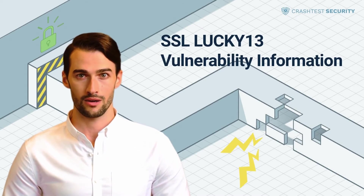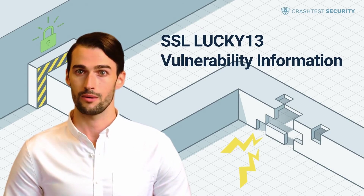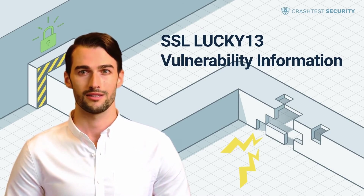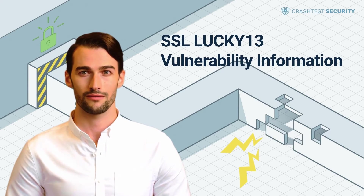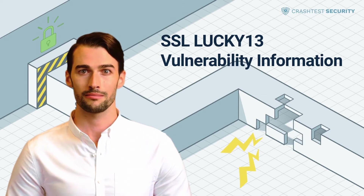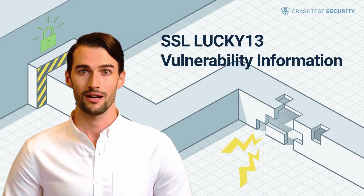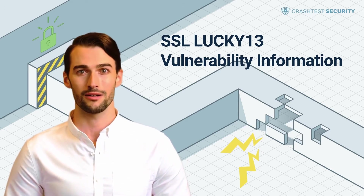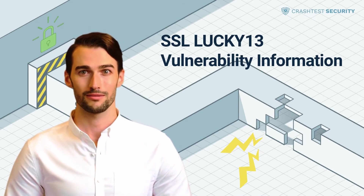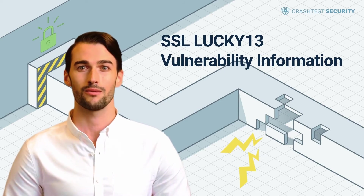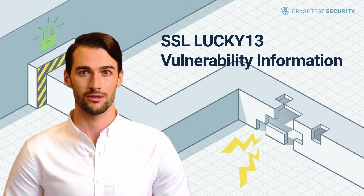The vulnerability that allows the SSL Lucky 13 to be made is due to a flaw in the SSL/TLS specification, rather than due to issues in specific implementations. The attack can be considered a more advanced type of padding oracle attack that exploits different calculation times depending on the plaintext being padded with one or two bytes or containing incorrect padding.